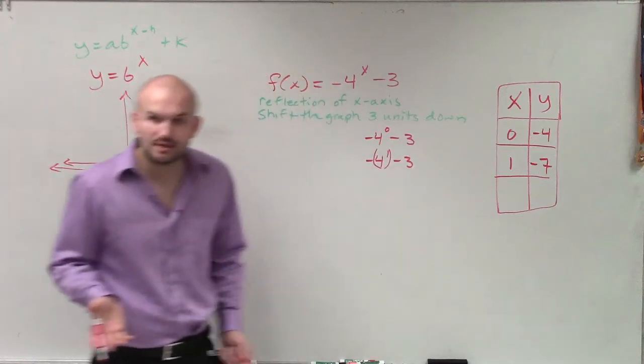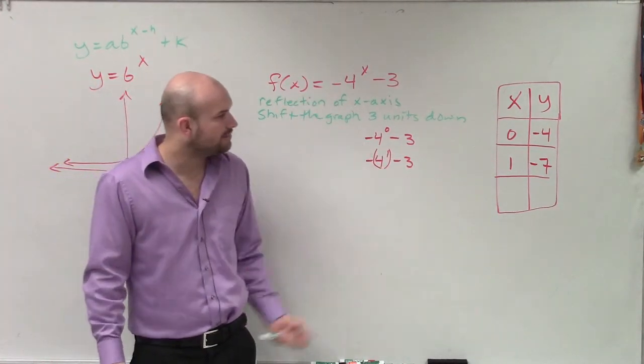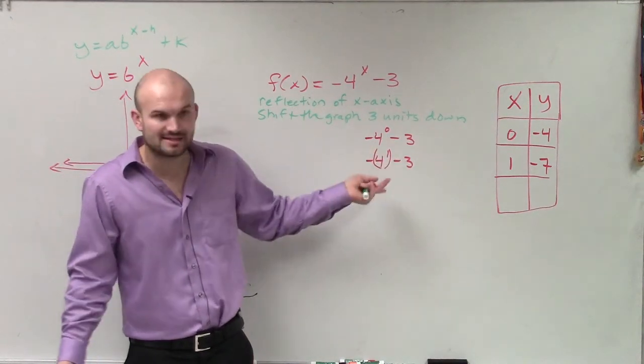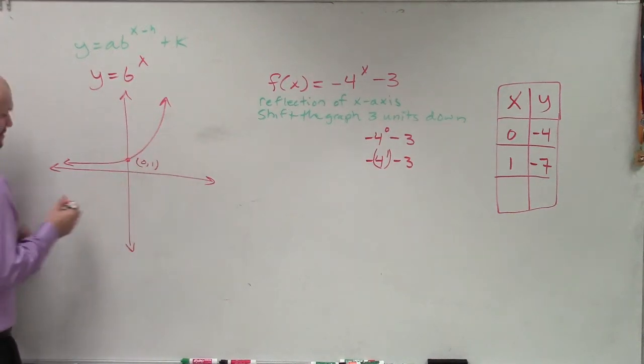If you want to do another point, go ahead. You know, you could use 2. You could do negative 1. But it's going to get a little bit more difficult if you do the negatives, because then that's going to be a fraction. But then I just have those two points. I could say, all right, well, my graph then is going to be at 0, negative 4.